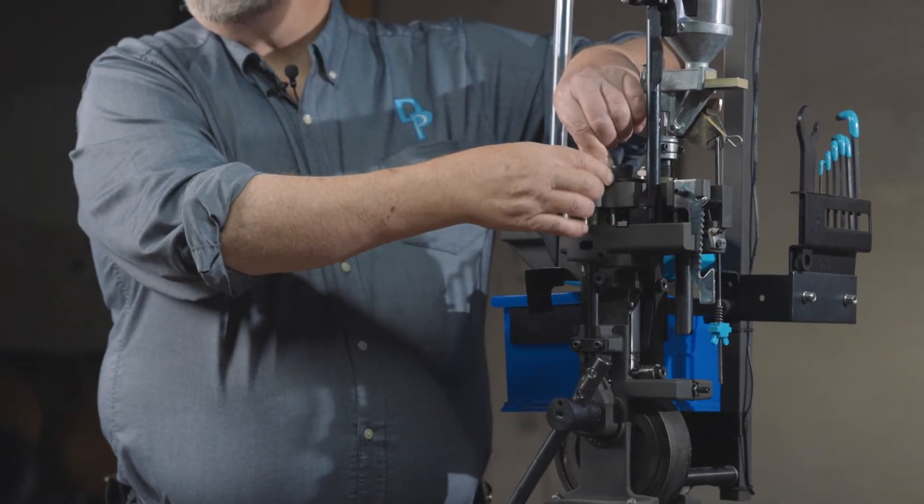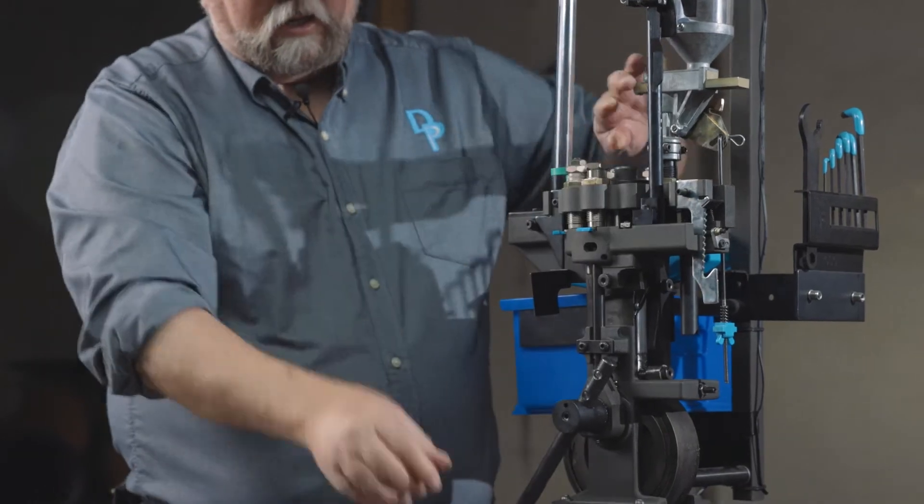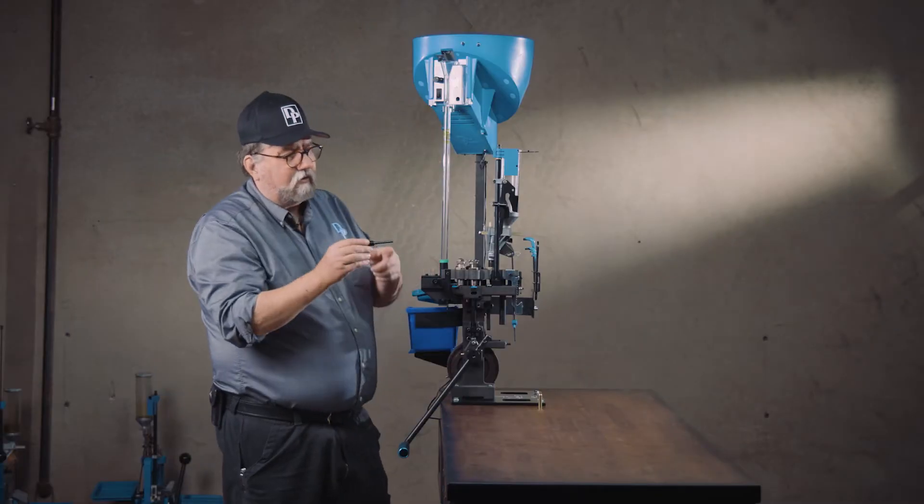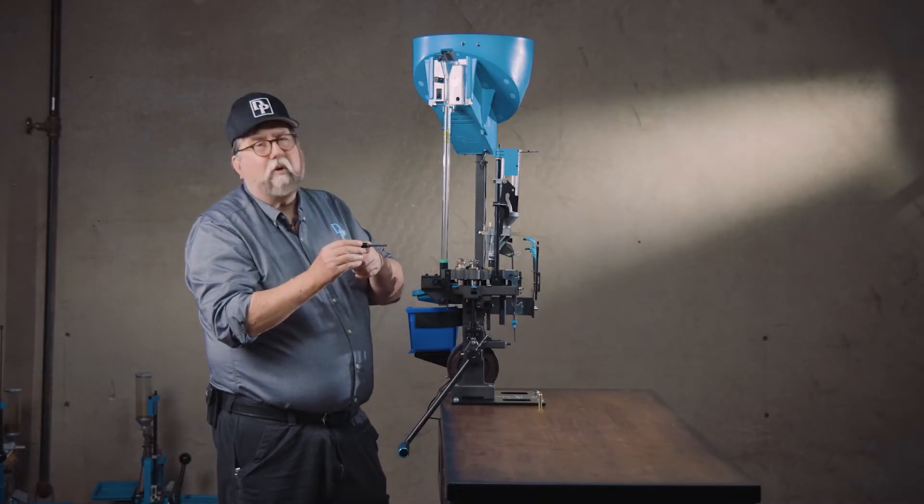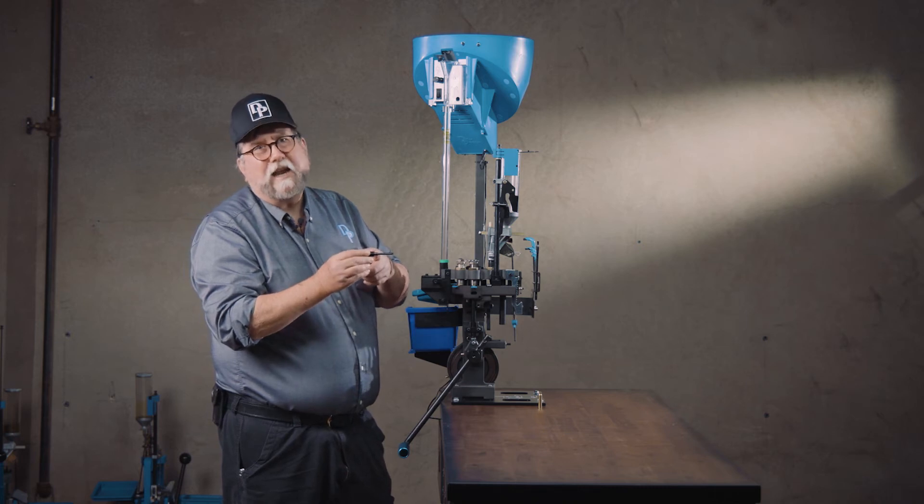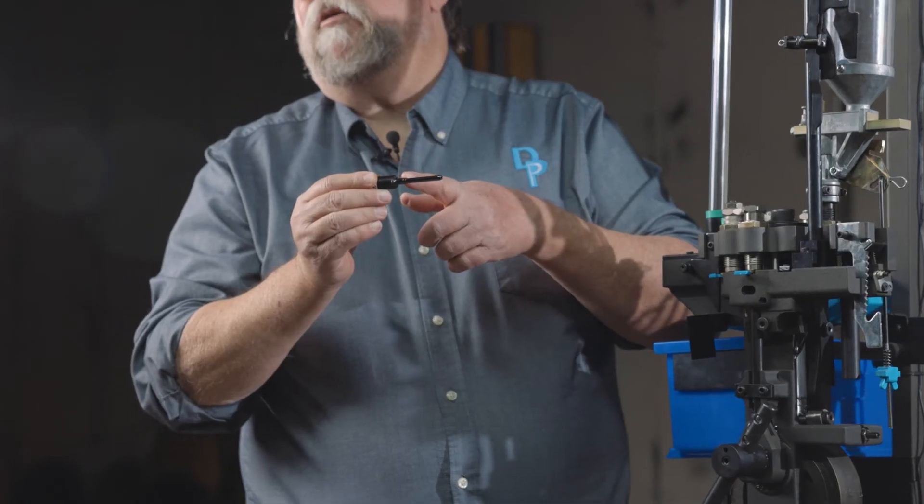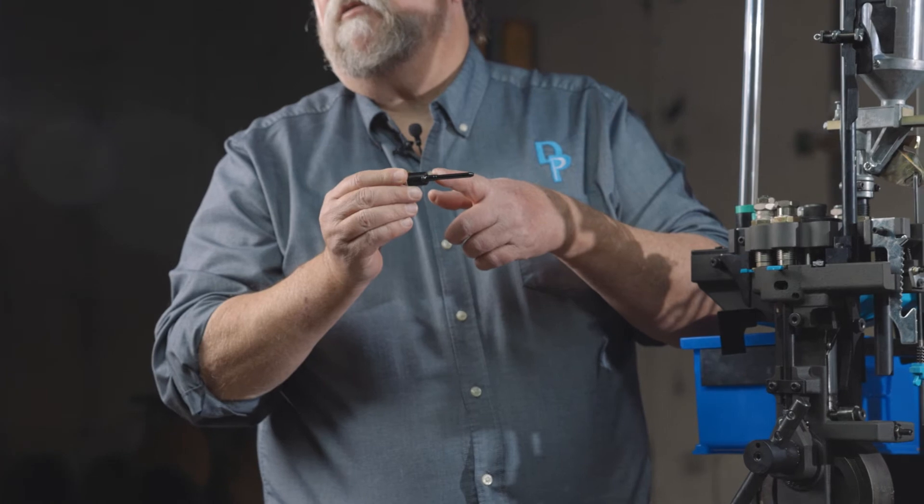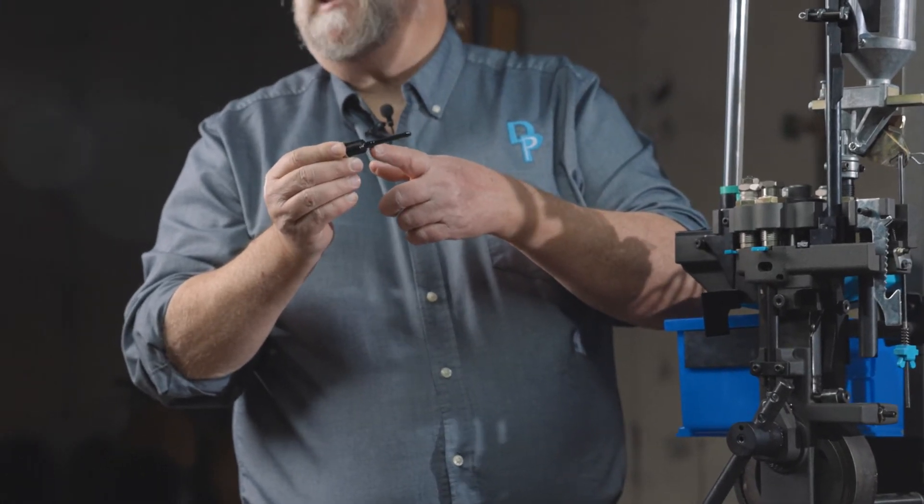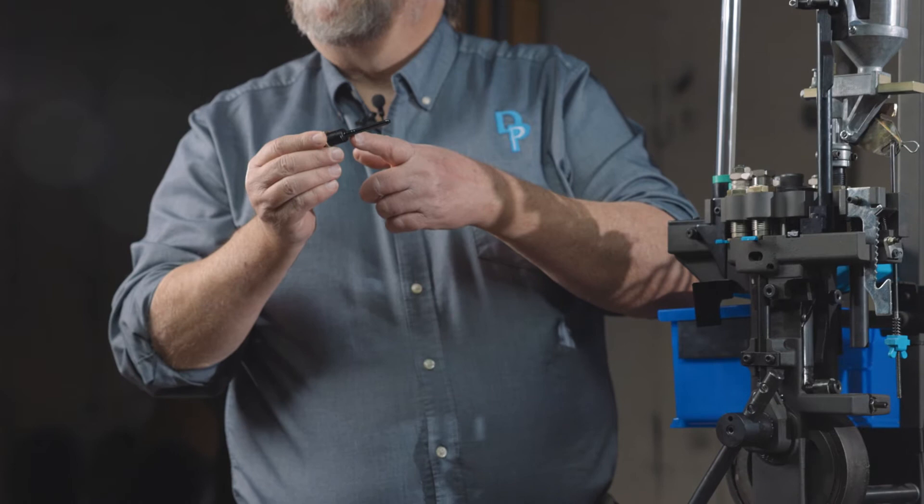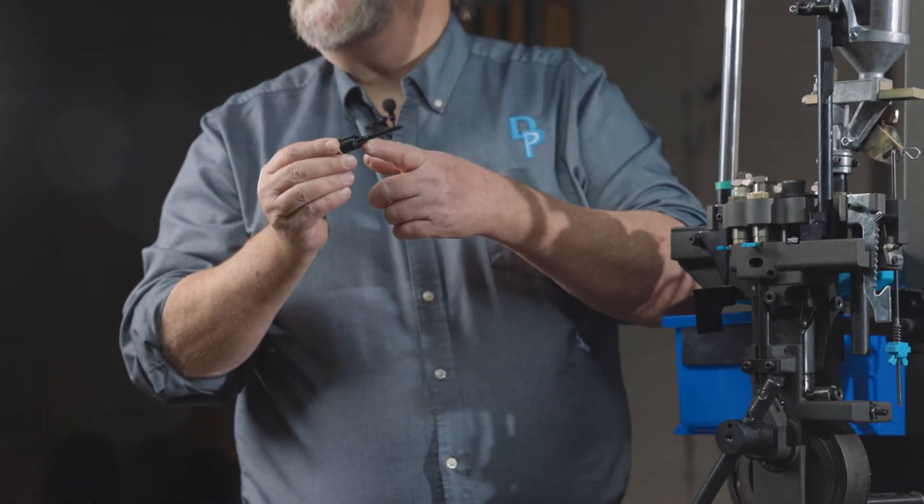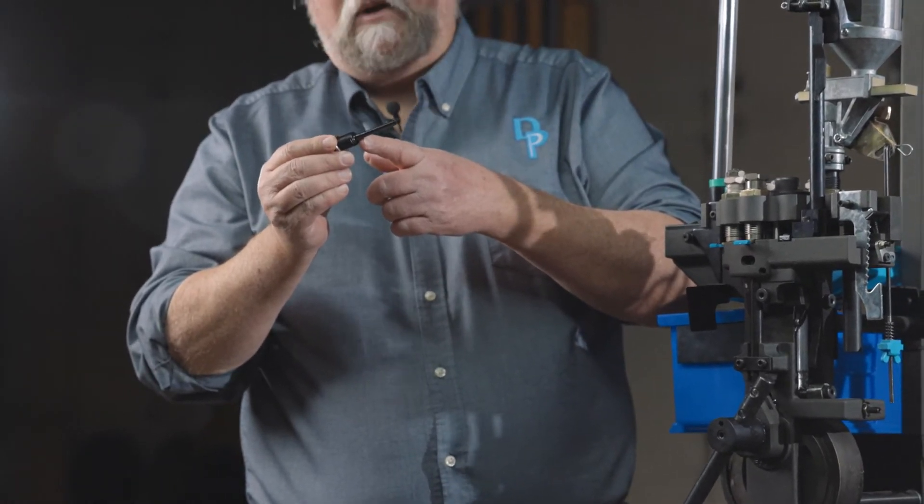Finger tighten the die lock ring. Now, inside of this is a rod that's going to hold the case down so that the swage rod pushing up doesn't push the case up through the shell plate, and it also has a little step machined in it to help expand the case neck to a uniform inside diameter.